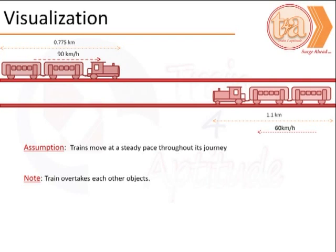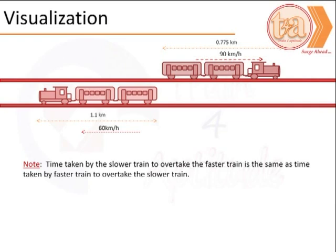Note that the trains overtake each other. Moving further, once the trains have overtaken each other, the visualization would be as above. What we need to note is that either the slower train overtaking the faster train or the faster train overtaking the slower train is nothing but the same.